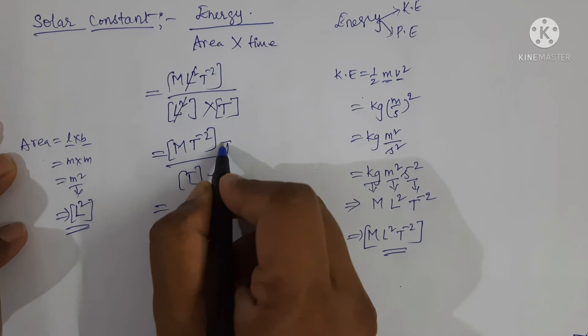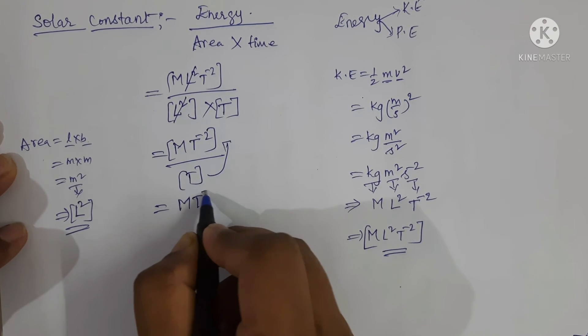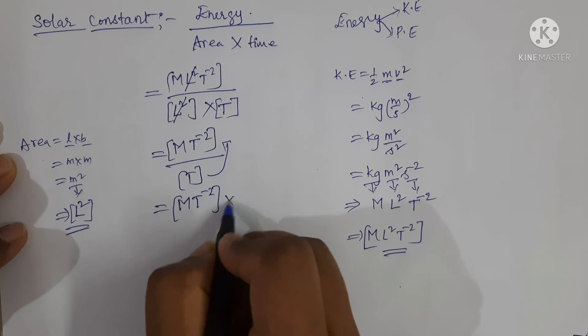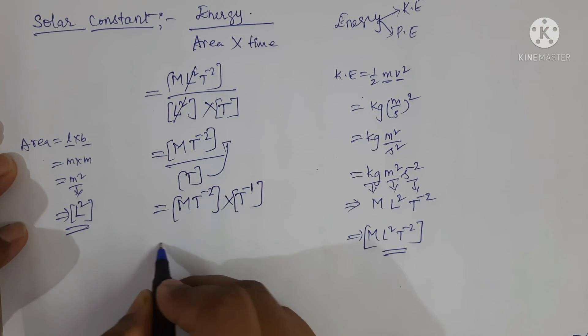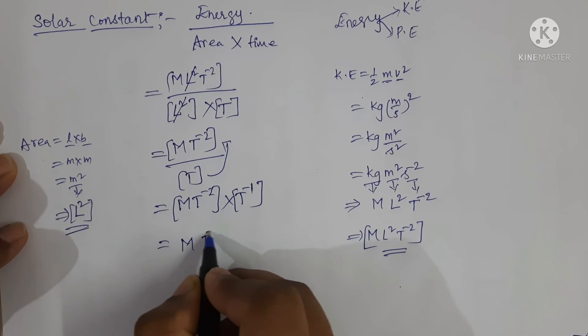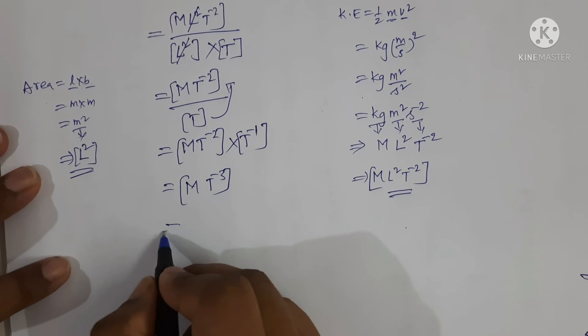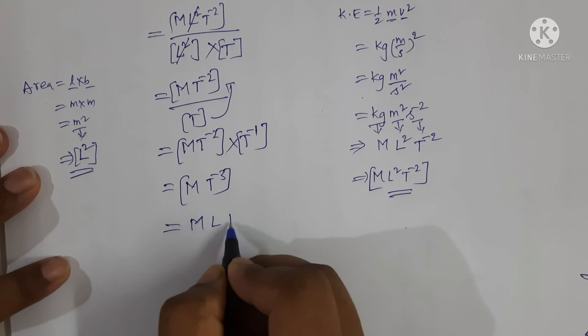Now write this T on the numerator. So M T power minus 2 into T power minus 1, which is equal to M T power minus 3. Now write the dimensions in the format of M L T.